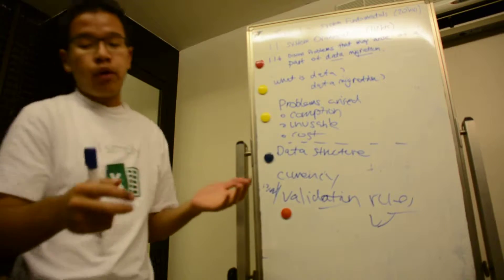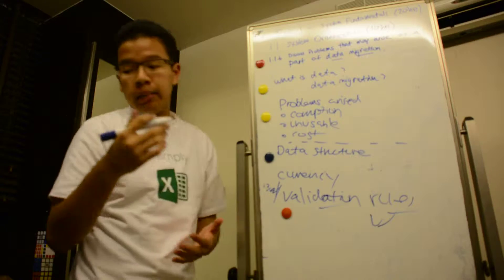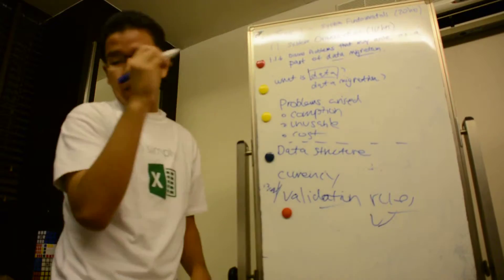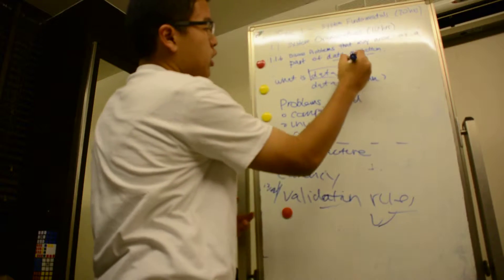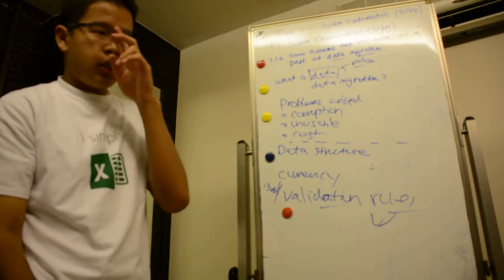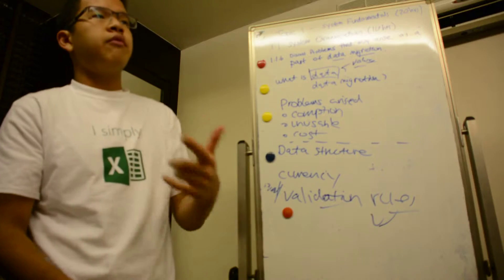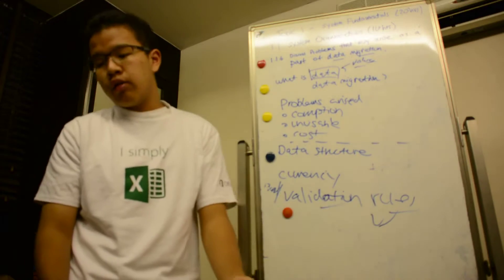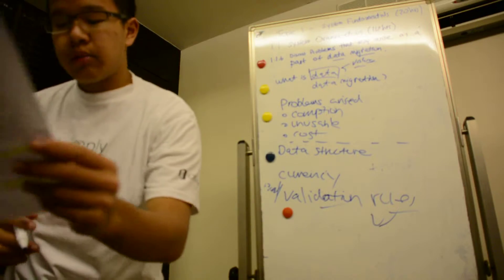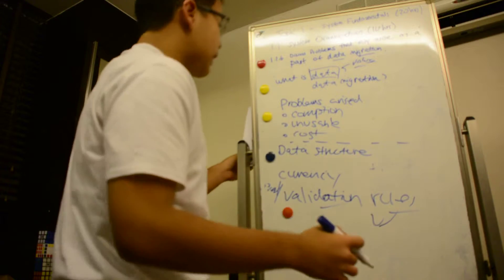So first of all, the first question I'm going to ask is: what is data? Data is a broad term. It includes not only values stored in databases such as name, photos, phone, address, age, and so on, but also pictures, documents, and any other files that are important to many businesses.